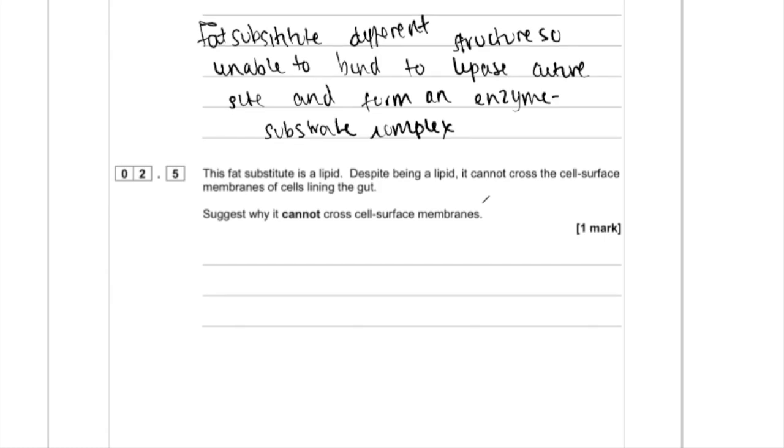Moving on to the final part. This fat substitute is a lipid. Despite being a lipid, it cannot cross the cell surface membranes of cells lining the gut. Suggest why? So again, what's it testing your knowledge of? It's testing your knowledge of transport across cell membranes. To understand why it can't cross the cell surface membrane, to just suggest something. There might be a few possible options here. We need to think about, in what situations can things cross cell surface membranes? Things that can cross cell membranes are things that are small and things that are non-polar. So it's going to be the opposite if it can't. So it may be large or it may be polar, for example.